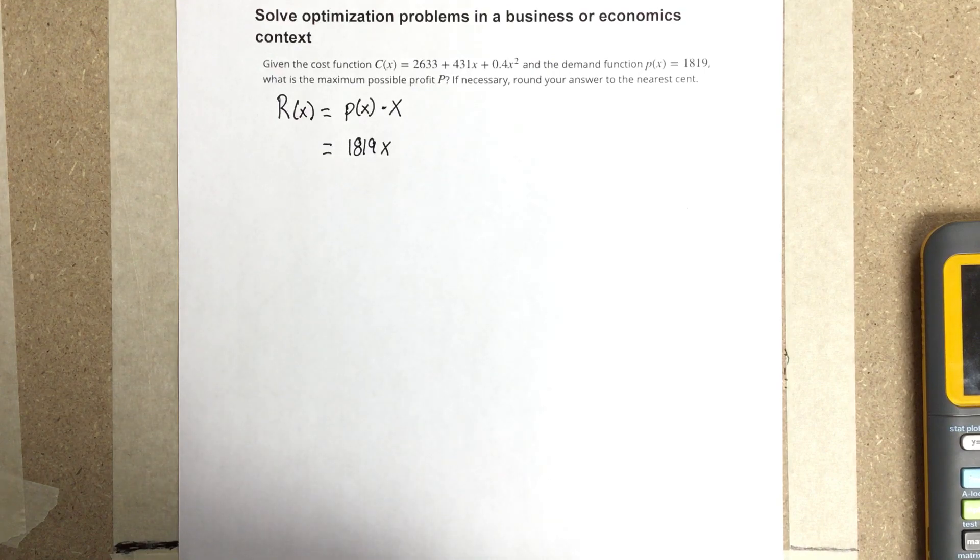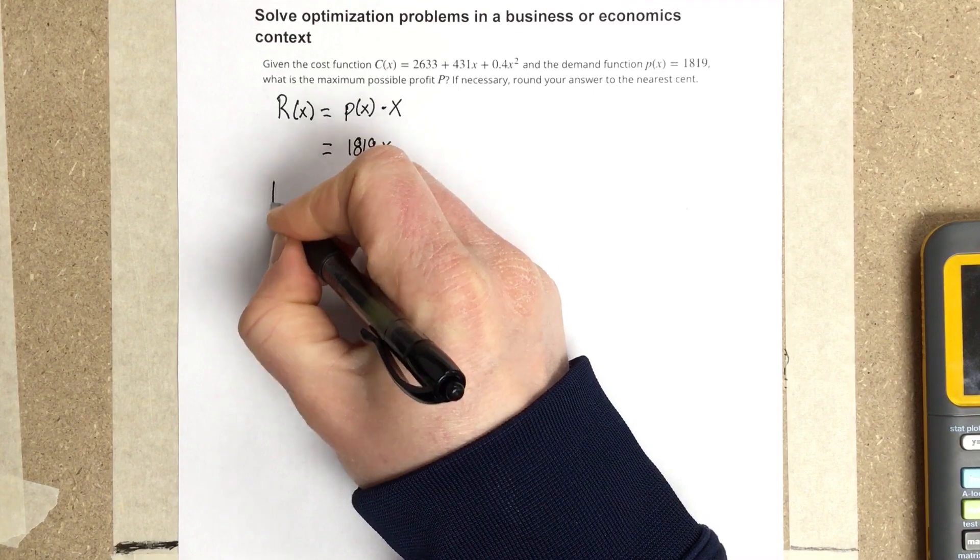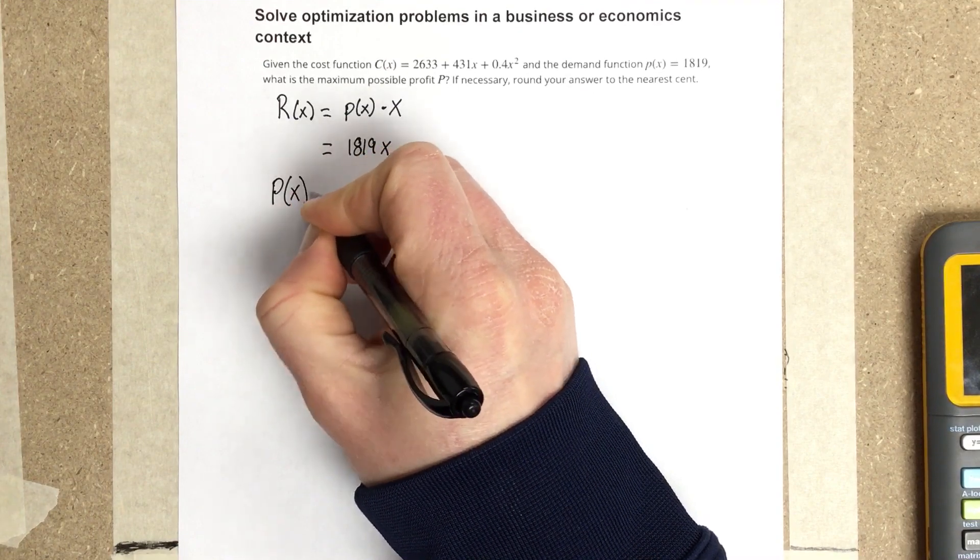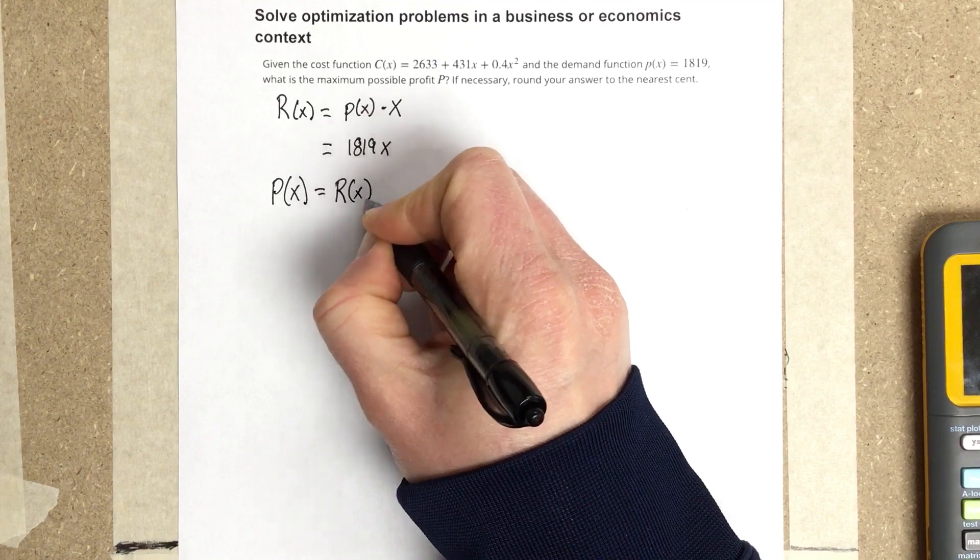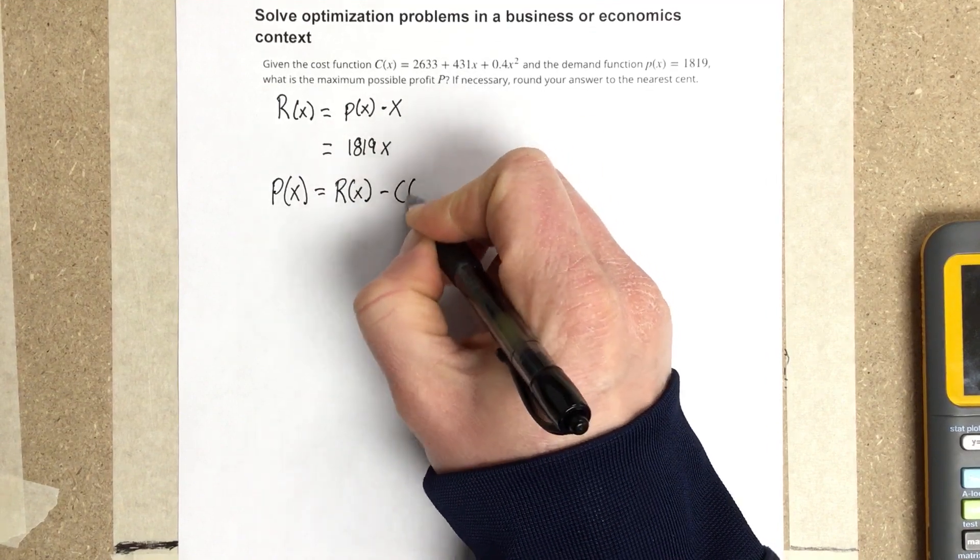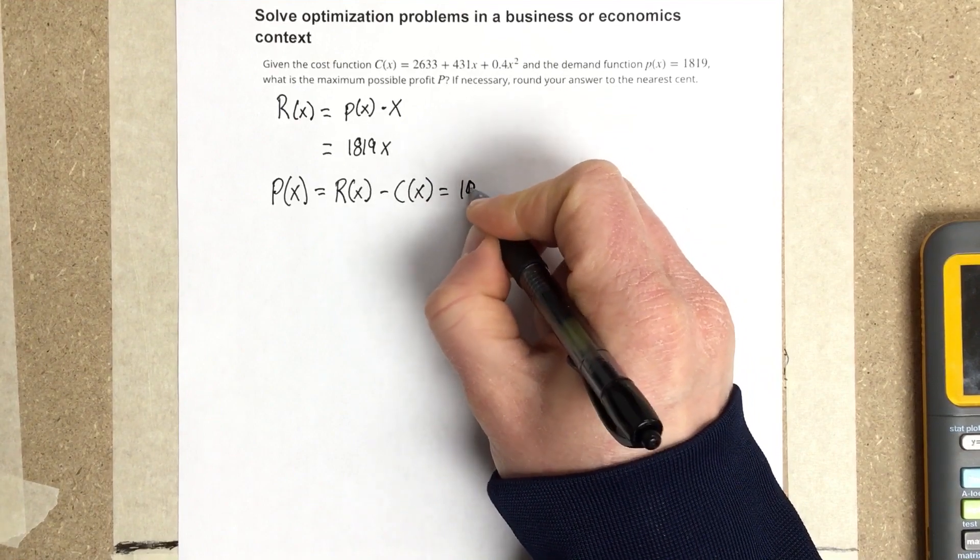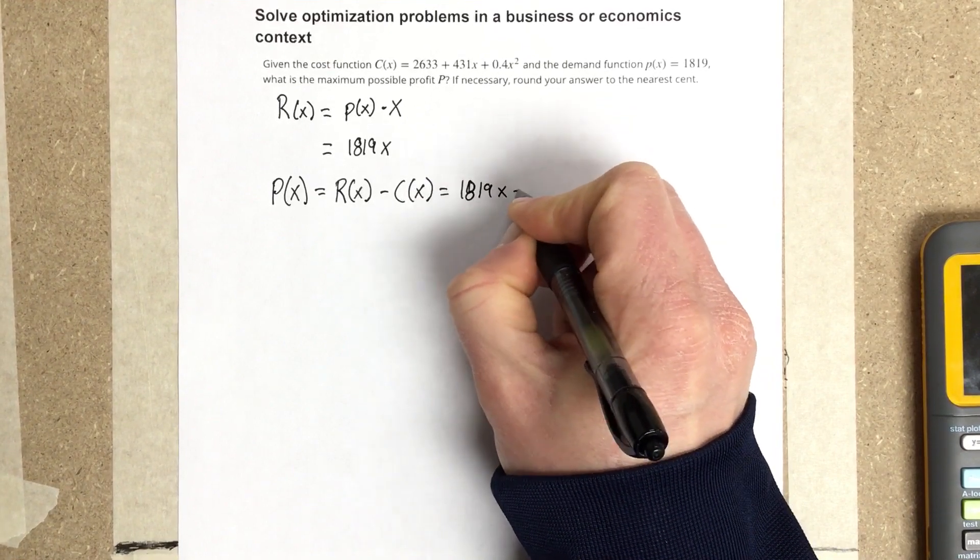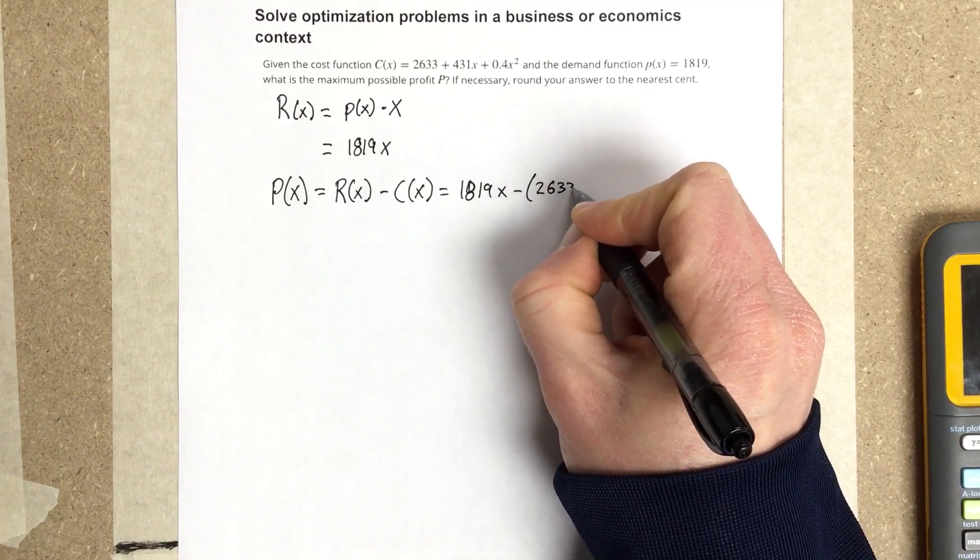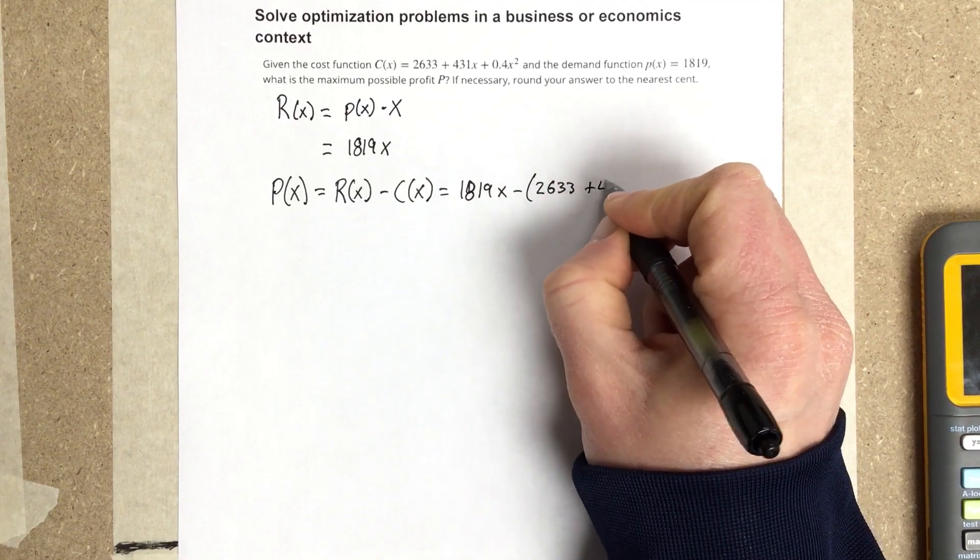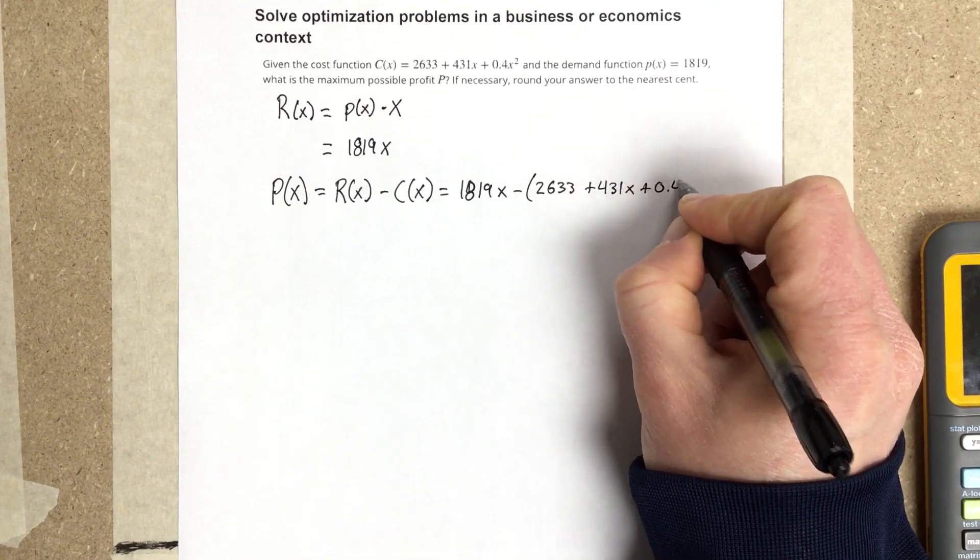The profit equation equals revenue minus cost. In our case, that's P(x) = R(x) - C(x) = 1819x - (2633 + 431x + 0.4x²).